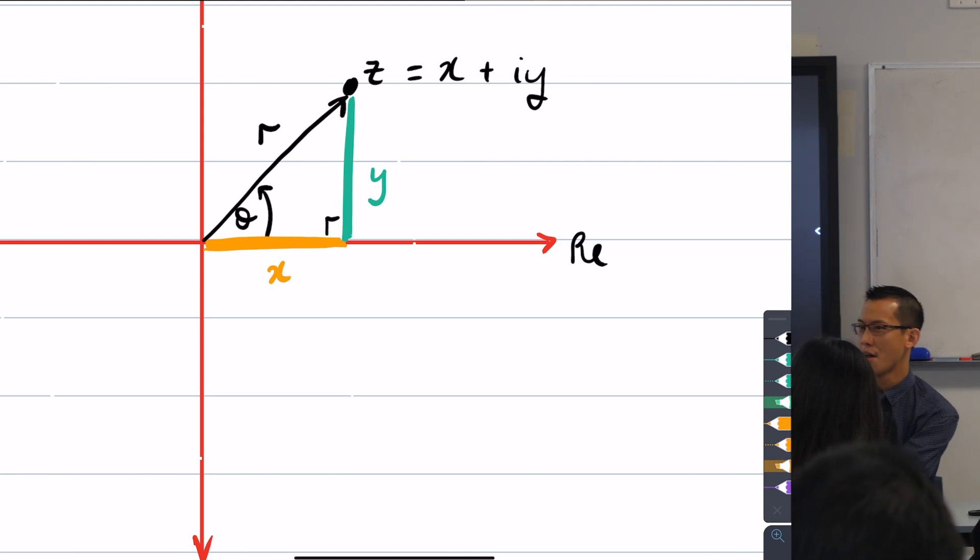Now because I have x, y, r, and theta, I have all of them existing in this same right angle triangle, this is all I need to get the connection.